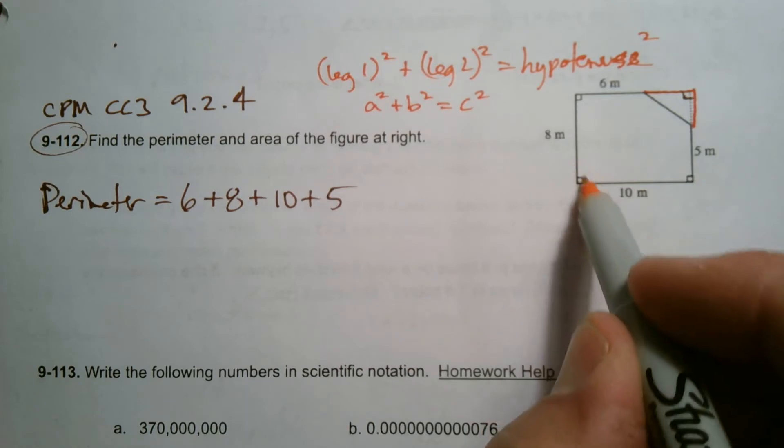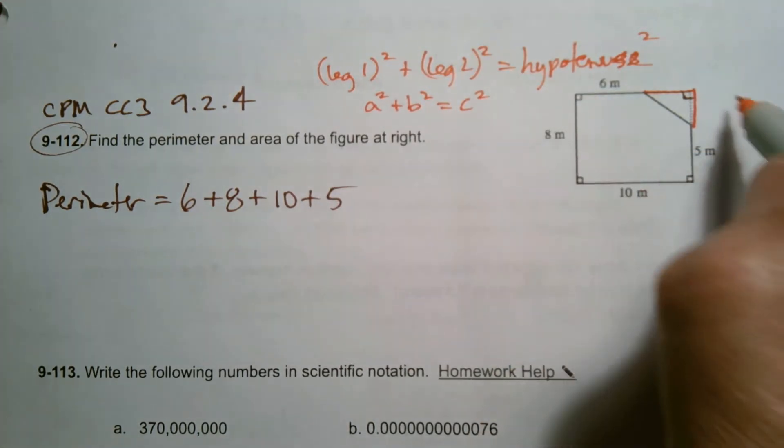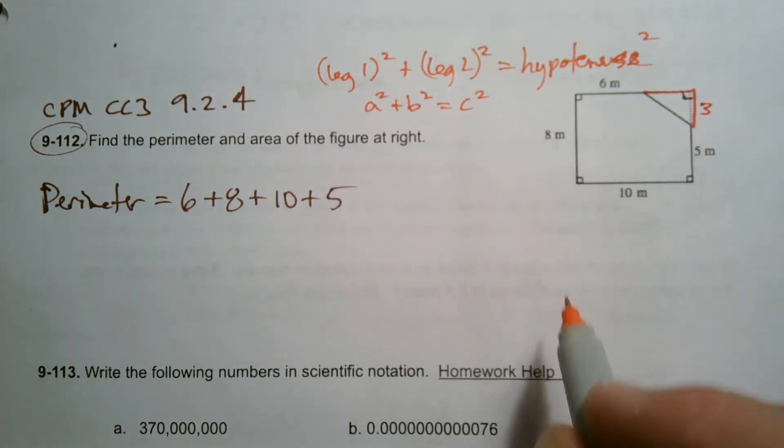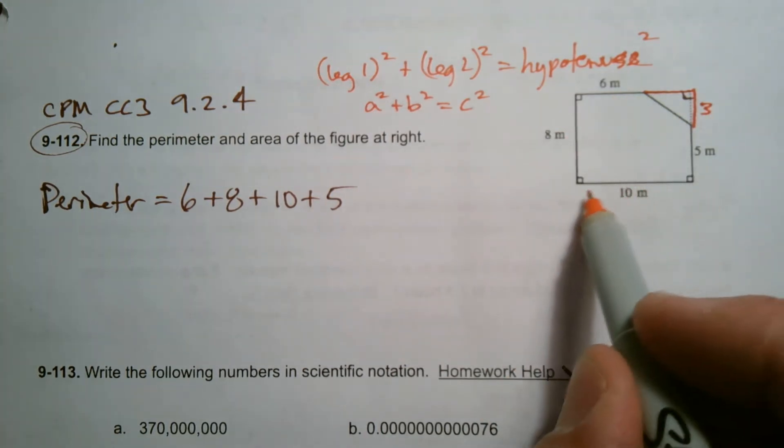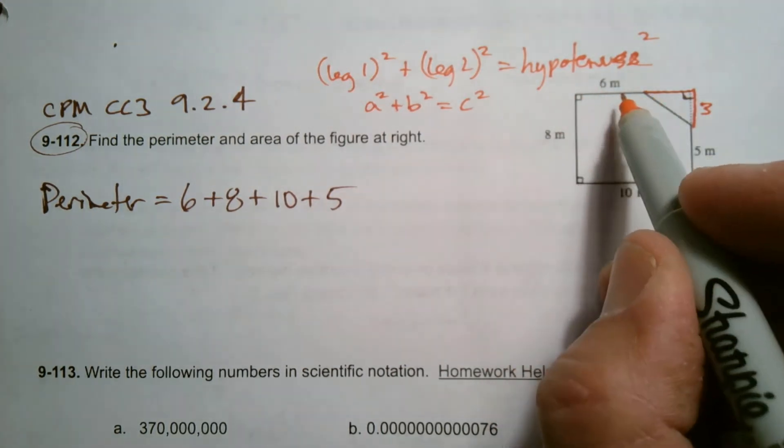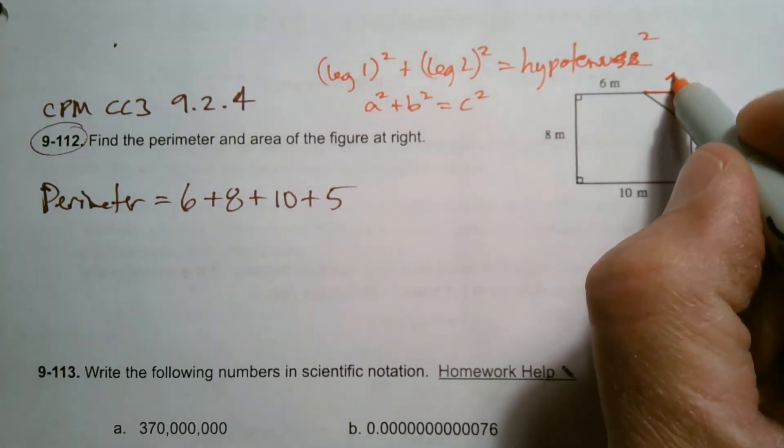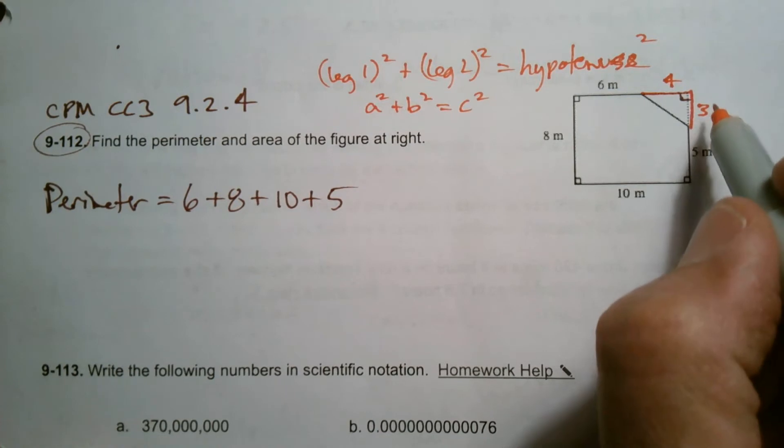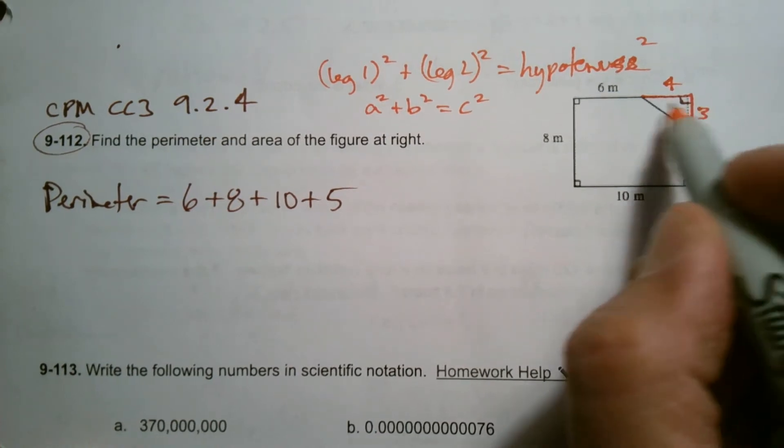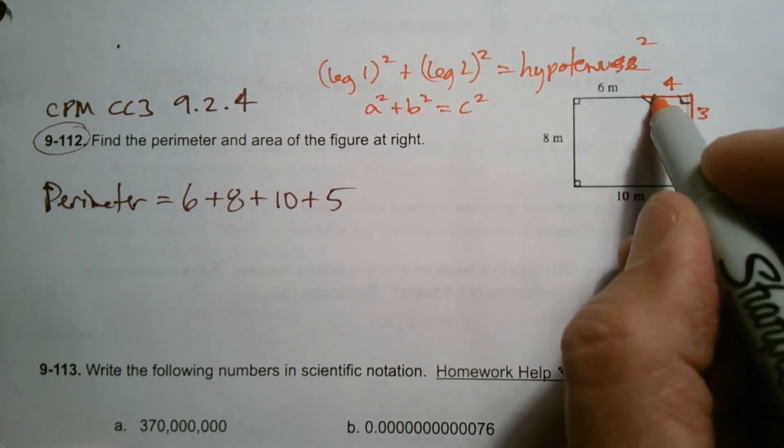So what are those legs? If this is five, but all of this over here is eight, I mean, that means the remainder, that would be three, right? Three plus five is eight. All of this over here is 10, but this little piece is six. So the remainder over here, that other part would be four because six plus four is 10, right? So this triangle has a leg of three, a leg of four.